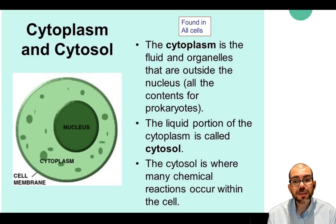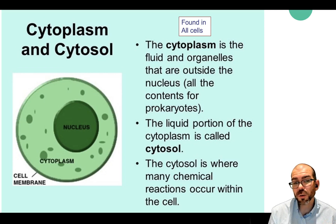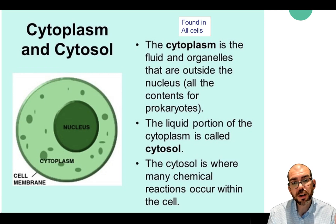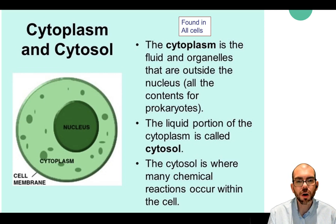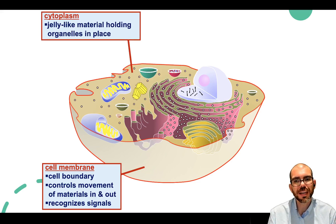Next up is the cytoplasm and the cytosol. Inside the cell is a lot of space, referred to as the cytoplasm—sometimes also used to mean all of the contents inside the cell. That space is filled with a nutritious liquid called cytosol, which provides nutrients to the cell and is where specific chemical reactions happen. Cytoplasm and cytosol are found in both prokaryotic and eukaryotic cells.